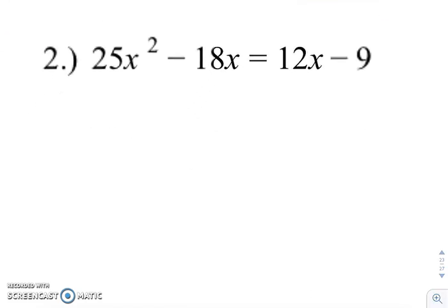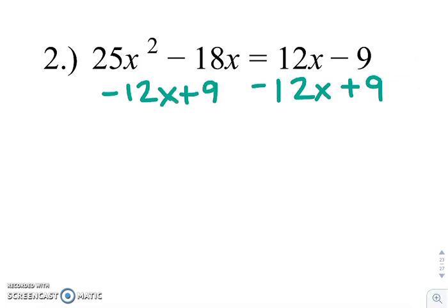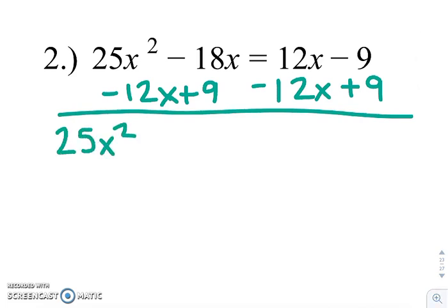So if we look at number two, we want this to equal zero, so we want to subtract that 12x and add that nine over to the other side. So what this becomes then is 25x² - 30x + 9 = 0.